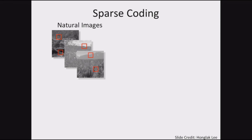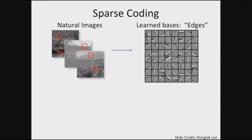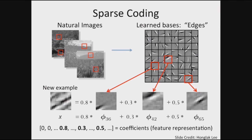If you apply sparse coding to natural images — take little patches and learn these bases — they look really nice, finding edge-like structure. Given a new example, it can be written as a linear combination of a few of these bases. That sparse representation turns out to be quite useful as a feature representation of your data. Back in 2006, work done at Stanford showed that if you convolve these learned bases, you get feature maps much like those in convolutional neural networks, which you can then use for classification.